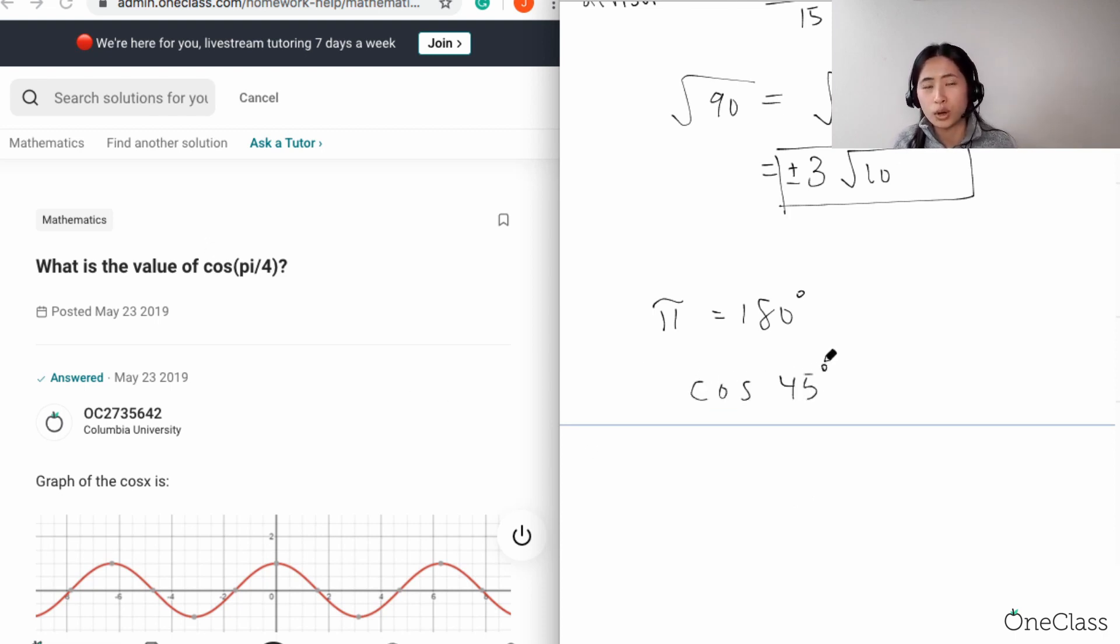Right, and we know right off the bat cosine 45 degrees is square root of two over two. Just to double check, yeah it is square root of two over two.